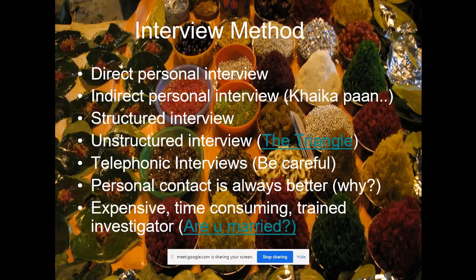Today we have our display interview method. We have previously seen two methods of data collection — one was collecting information through correspondence, and another was the observation method. Today we will look into the interview method. There are different types of interview methods with the help of which primary data can be collected. The first method is the direct personal interview method. In a direct personal interview, the person who wants the information — the investigator — and the person from whom the information is to be collected — the respondent — come face to face and there is an exchange of information between them.